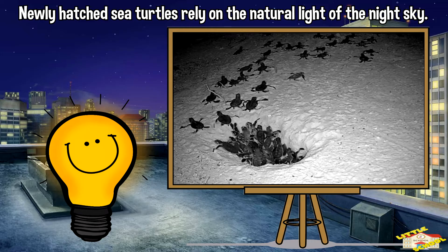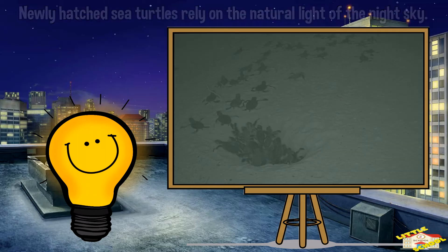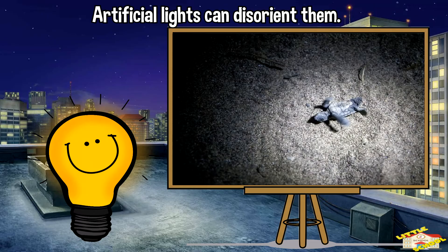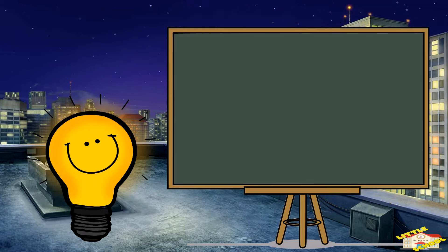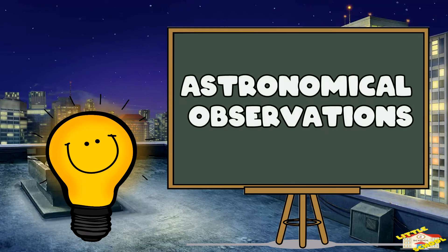For example, newly hatched sea turtles rely on the natural light of the night sky to find their way to the ocean. Artificial lights can disorient them and lead them away from their intended path.